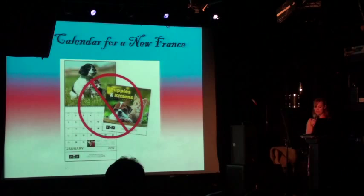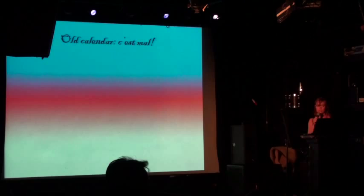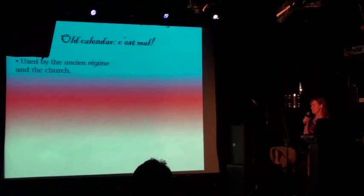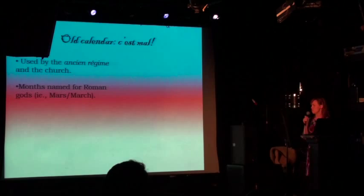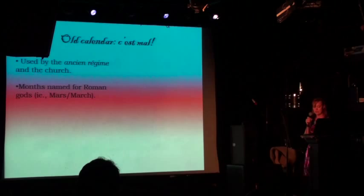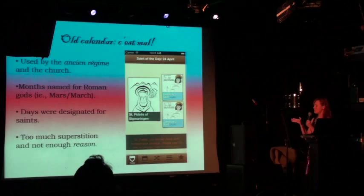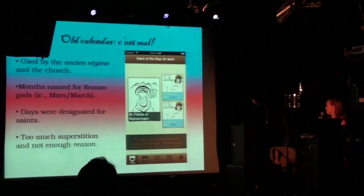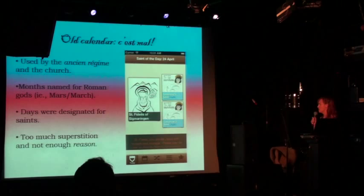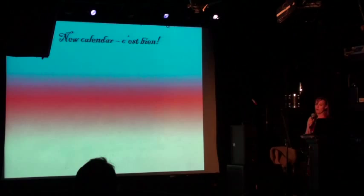So they convene this group of guys to put together a whole new calendar — they're not going to use their kitten calendar anymore. So what was wrong with the old calendar? The old calendar was the Gregorian calendar, which we use today. It was of course used by the ancien régime and the church, so that was one strike against it. Months were named for Roman gods, which you probably know. Also days of the week are named for Roman gods — there was a pagan aspect that they did not like. And days were designated for saints. So in general, there was just too much superstition and not enough reason. This is a Saint of the Day app for kids — you can see that April 24th is Saint Fidelis of Sigmaringen. So they wouldn't have liked this app at all. That was the problem.